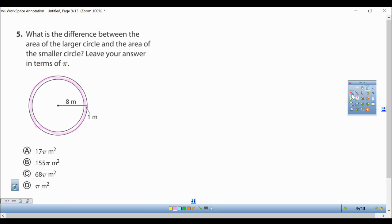Now in order to find the area between them, we need to first find the area of the large circle and subtract the area of the small circle.